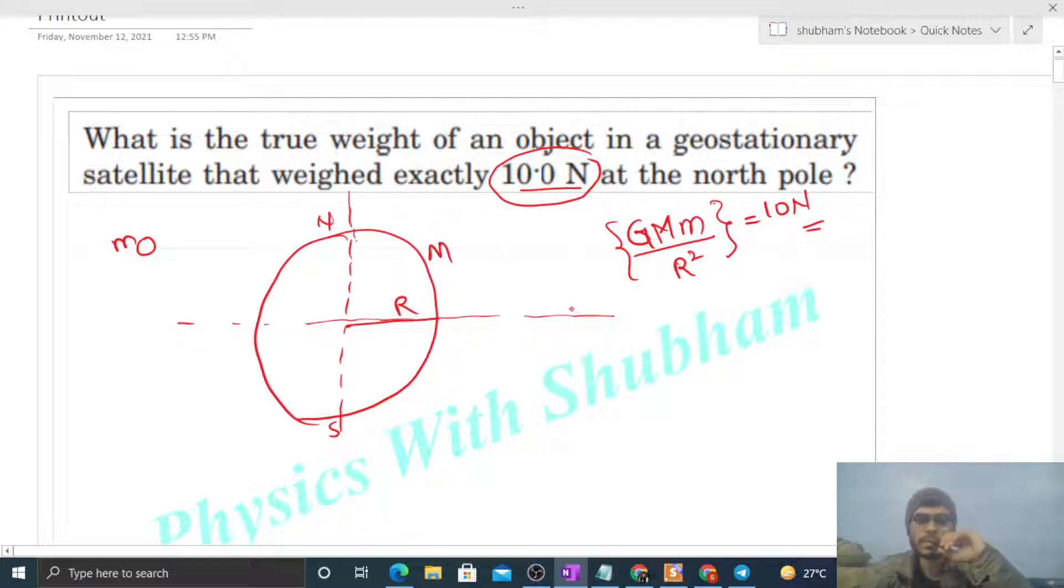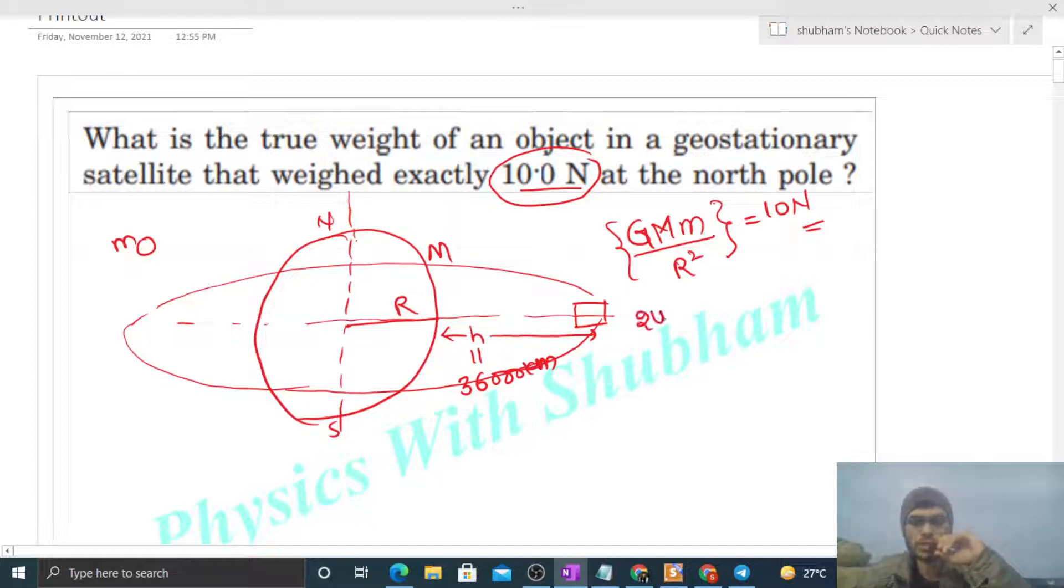Now we have a geostationary satellite. What is a geostationary satellite? It moves in the equatorial plane at a height h from the surface of Earth, where h is 36,000 kilometers. It rotates in this orbit and its time period of rotation is the same as the time period of rotation of Earth, that is 24 hours.